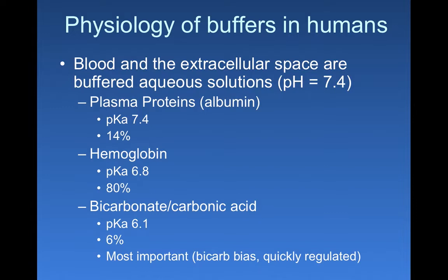There are lots of buffering components in the blood. One of the most prevalent non-hemoglobin proteins in your blood is albumin. Albumin has a pKa of 7.4, which is really handy because that's the pH at which you want to keep your blood. That means you have an equal amount of the acidic form and the basic form of albumin. However, the buffering capacity of albumin accounts for only about 14% of your blood's total buffering capacity.